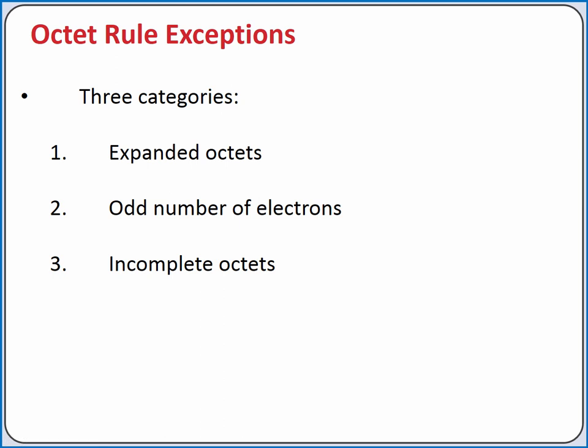We'll discuss three categories of exceptions to the octet rule when drawing Lewis structures. The first exception is atoms that can accommodate more than 8 electrons. The second exception is molecules with an odd number of electrons. And the third exception is atoms that are satisfied with fewer than 8 valence electrons.